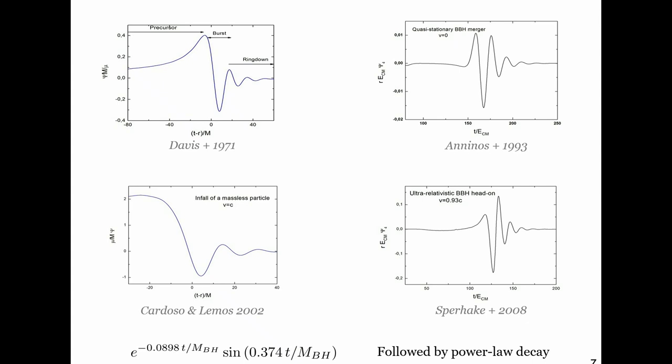The parameters are always the same. If you have a black hole of mass M, the waveform is a sine of 0.374 times T over the mass of the black hole in geometrized units. A black hole with the mass of the sun will have a frequency of order 2 kilohertz. The damped exponential always looks the same — always the same values, the same constants.